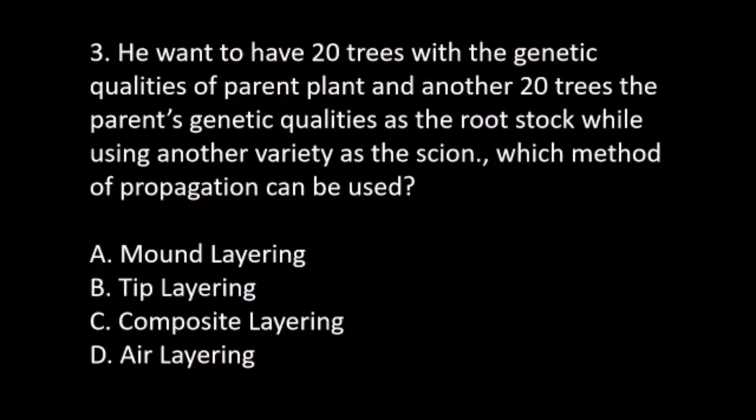Number 3. He wanted to have 20 trees with the genetic qualities of the parent plant, and another 20 trees using the parent's genetic qualities as the rootstock while using another variety as the scion. Which method of propagation can be used? A. Mound layering. B. Tip layering. C. Composite layering. D. Air layering. The answer is D. Air layering.